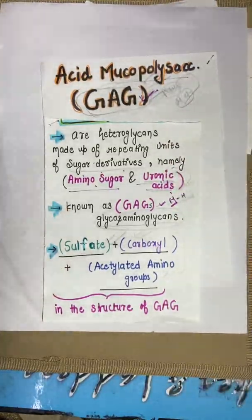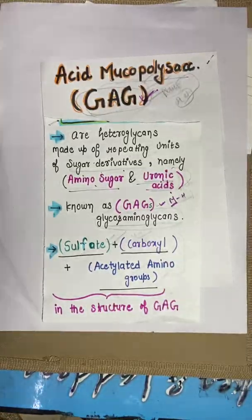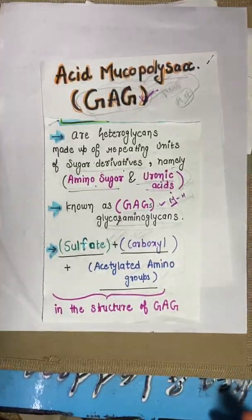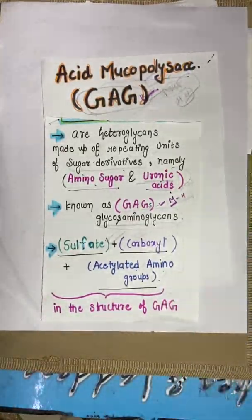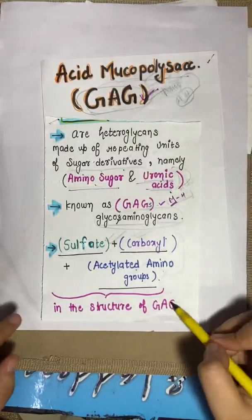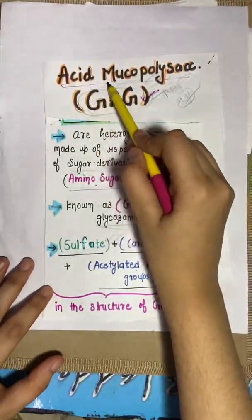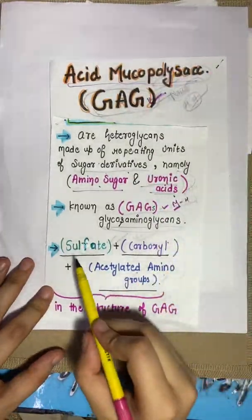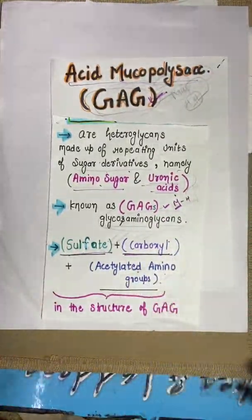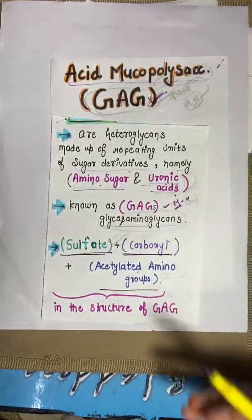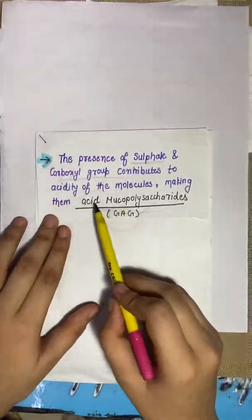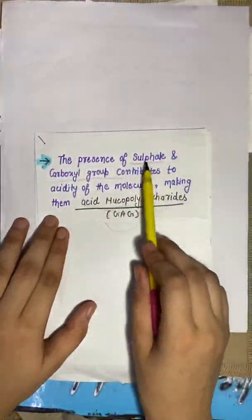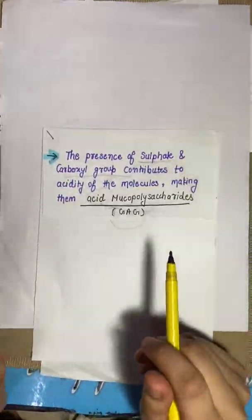Looking at the GAG structure, there are different types. In their structures, you will find a sulfate group, carboxyl group, and acetylated amino group. We call them acid mucopolysaccharides because of the presence of sulfate and carboxyl groups, which give them acidic properties.